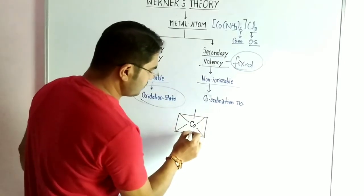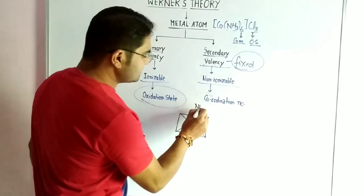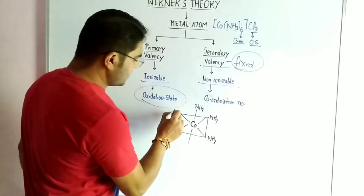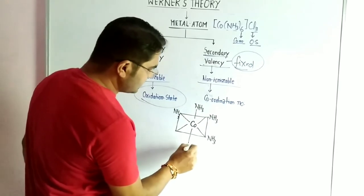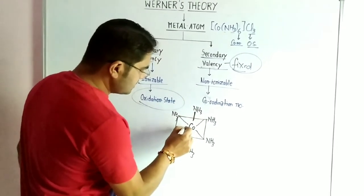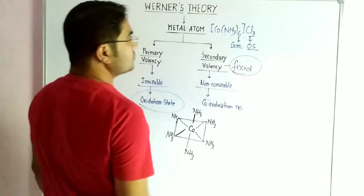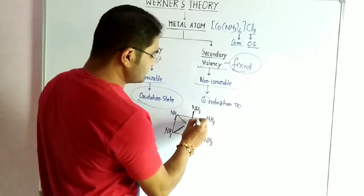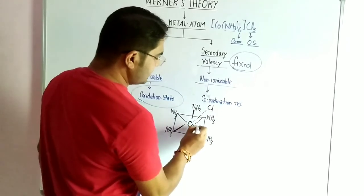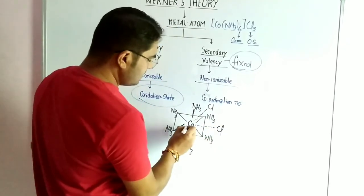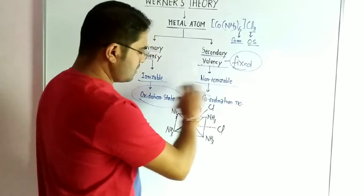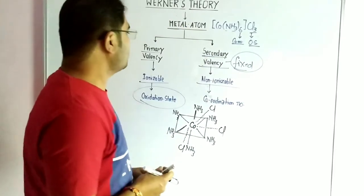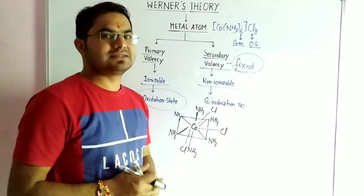In terms of geometry, 6 ligands are attached in a specific way. NH3 groups are attached and secondary valency can be represented directly as lines. Secondary valency is present in three dimensions and in this way we can represent the geometric formation of the complex. Werner's theory allows you to represent primary valency and secondary valency in this manner.